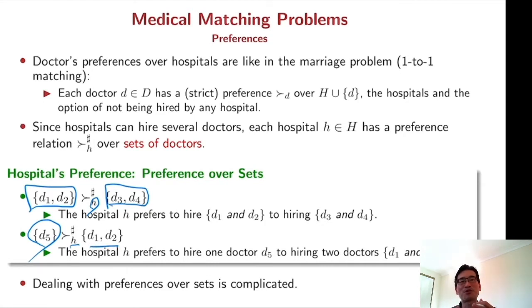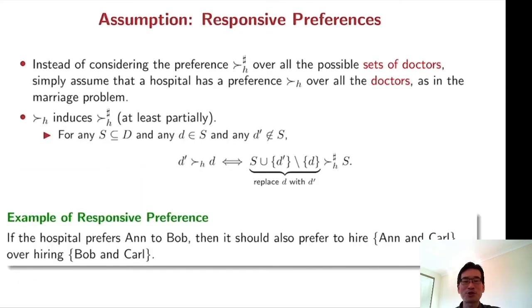So basically, dealing with the preference over set is very complicated. We are going to have an assumption for simplicity. Instead of considering the preference over all the possible set of doctors, we are going to assume that a hospital has a preference over all doctors, as in the one-to-one matching.